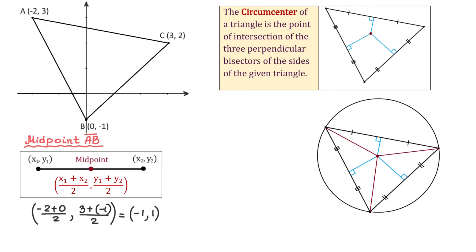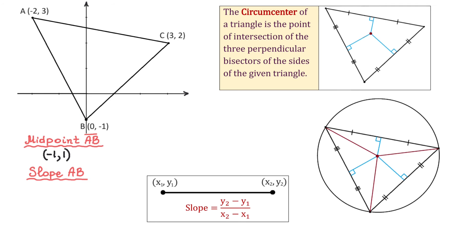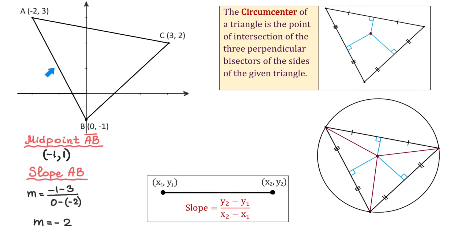Next, we will find the slope of the line that passes through points A and B. The formula for slope through (x₁, y₁) and (x₂, y₂) is (y₂ − y₁)/(x₂ − x₁). Using points A and B, the slope m = (−1 − 3)/(0 − (−2)) = −4/2 = −2. So the slope of this line is −2. So far we know that the midpoint of line segment AB is (−1, 1) and the slope is −2.